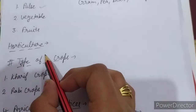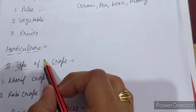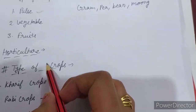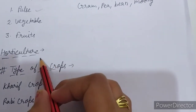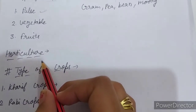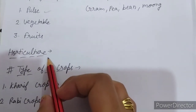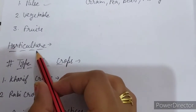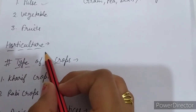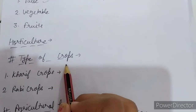Let's move on to horticulture. What is horticulture? Horticulture is the branch of science which deals with the study of vegetables and fruits — means science की ऐसी branch है जो vegetables और fruits के साथ deal करती है।